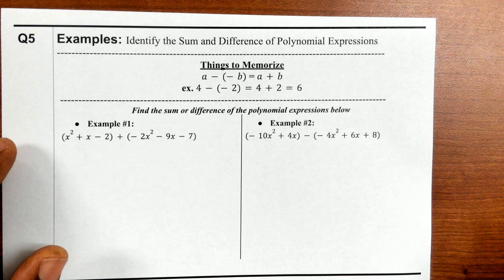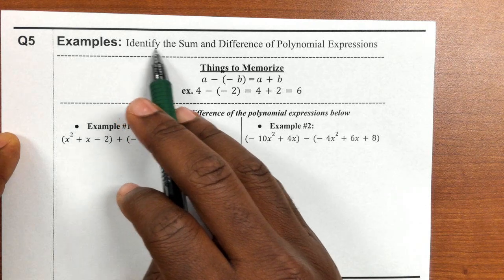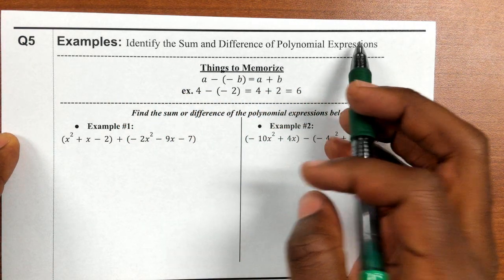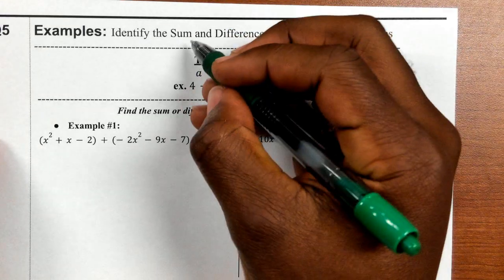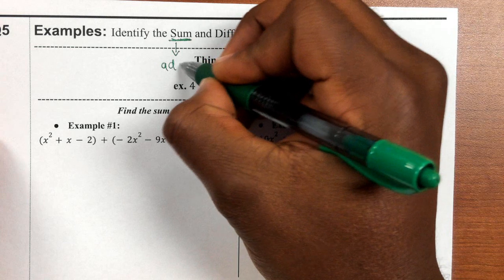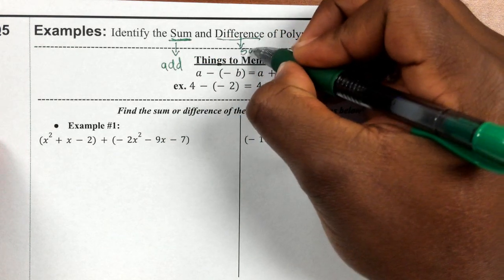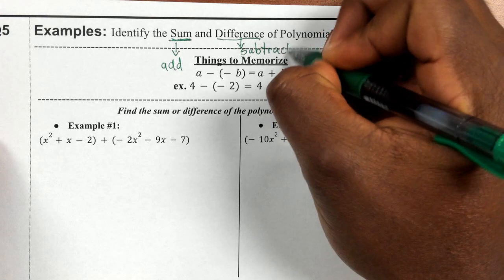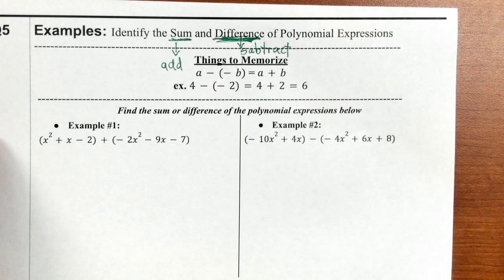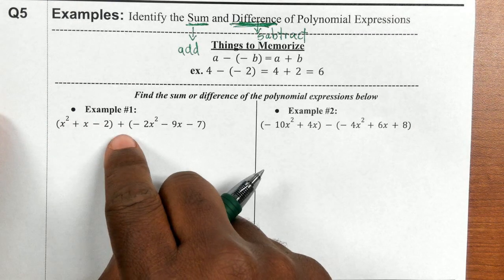Unit 7, question number 5 wants us to identify the sum and difference of a polynomial expression. Sum means you add and difference means you subtract. We're going to be adding and subtracting polynomials, so let's dive into the first question.